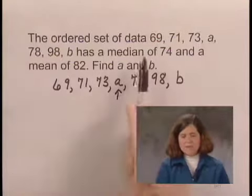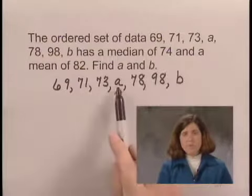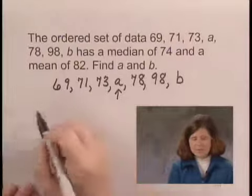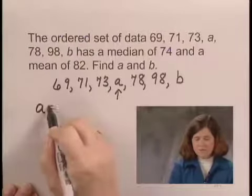But we're told that the set of data has a median of 74. Therefore, this number a has to be 74. So by applying the definition of median, we have found the value of a.